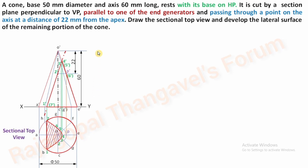Now the development of the lateral surface of the cone. In previous videos we discussed hexagonal pyramid, pentagonal pyramid, hexagonal prism, and pentagonal prism using the radial line development method for pyramids. For pyramids we use the true length of the slant edge; here we have to use the true length of the slant generators.